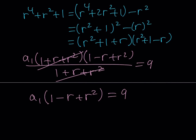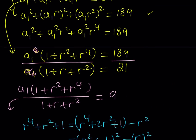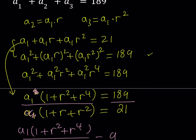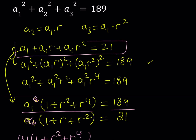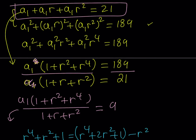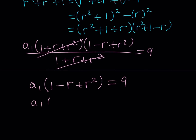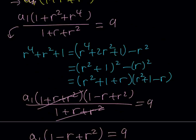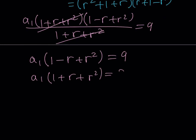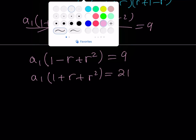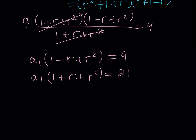We now have two usable equations: a_1·(1 − r + r²) = 9 and a_1·(1 + r + r²) = 21. Since both have a_1 (not a_1 squared), we can divide them side by side again to eliminate a_1. That gives (1 − r + r²)/(1 + r + r²) = 9/21, which simplifies to 3/7.